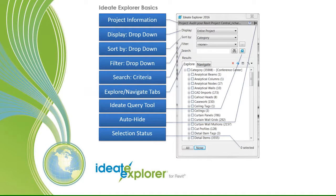I'd like to give you a quick introduction of the interface. ID8 Explorer is an add-on application and part of a suite of products from ID8 software. The top portion of the dialog is all about finding things — setting whether you want to display the entire project, your active view, a subset, or a selection set. You can sort by category, phase, level, or work set, and further refine with filters and individual search criteria.